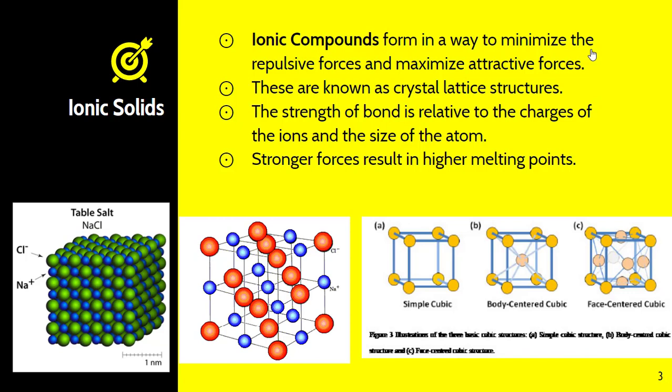If the charges are the same, then what we focus on is the atomic radius. Remember that larger atoms tend to have larger radii, and as a result when they bond, the distance between the two nuclei is longer. A longer distance between the nuclei means that the bond is not as strong, and so as a result you're going to have a lower melting point. Stronger forces result in a higher melting point. So keep in mind it's all about the strength of the bond, and that's relative to the charges of the ions and the size of the atom.